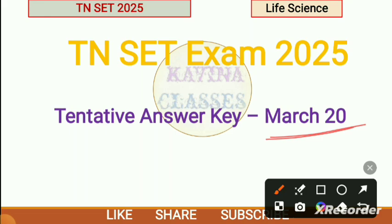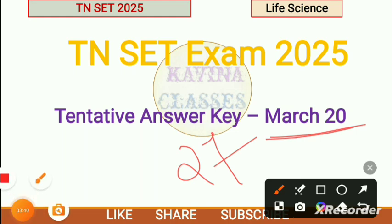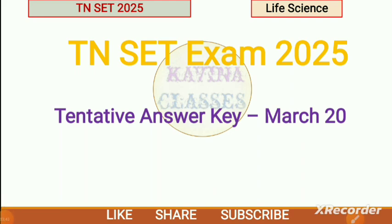They will release grievances. Within 1 week, we need to check the response sheet. Then they will release tentative answer keys again, and challenges will be accepted until around March 27. You can submit questions if you want to challenge any answers.